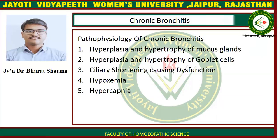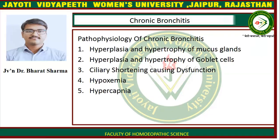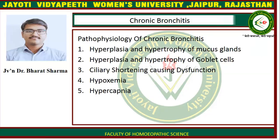The pathophysiology of chronic bronchitis includes: first, hyperplasia and hypertrophy of mucus glands; second, hyperplasia and hypertrophy of goblet cells; third, ciliary shortening causing dysfunction; and fourth, hypoxemia and hypercapnia.